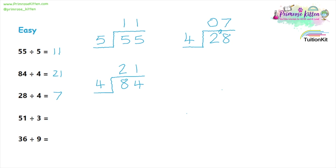Now we have 51 divided by three. Three on the outside, 51 in the middle, and then our bus stop. So how many threes will go into five? That is one whole three, and there'll be two left over — so we carry that two. Then we need to ask: how many threes go into 21? 21 divided by three is seven.